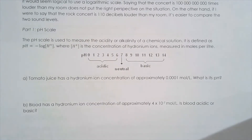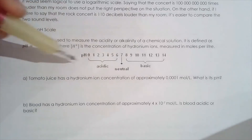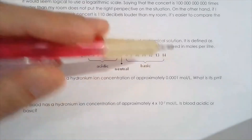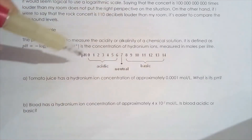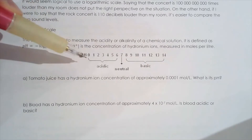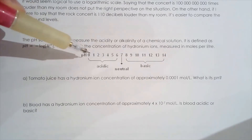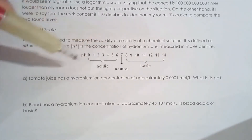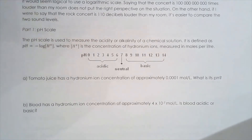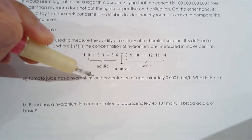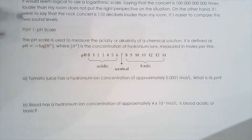I do want to mention that you can get a pH of less than 0 and a pH of greater than 14, but the solutions we generally work with range from 0 to 14. So we're working with tomato juice, and we say that tomato juice has a hydronium ion concentration of approximately 0.0001 moles per liter. And we ask: what's the pH?